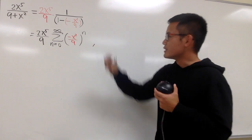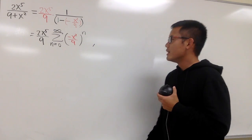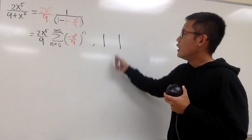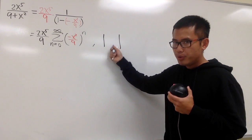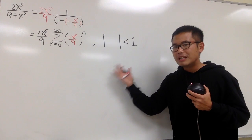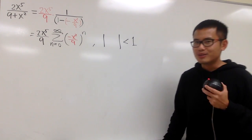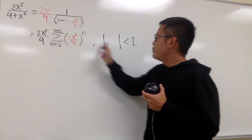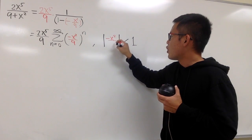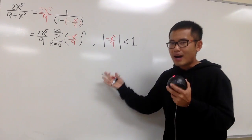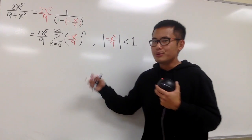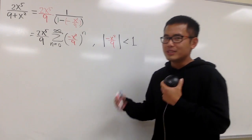We should also state the radius of convergence. We know we have to have the absolute value of the input less than 1 — that's what the best friend tells us. The input is negative x squared over 9. That's pretty much the setup; the rest is just algebra and simplification.